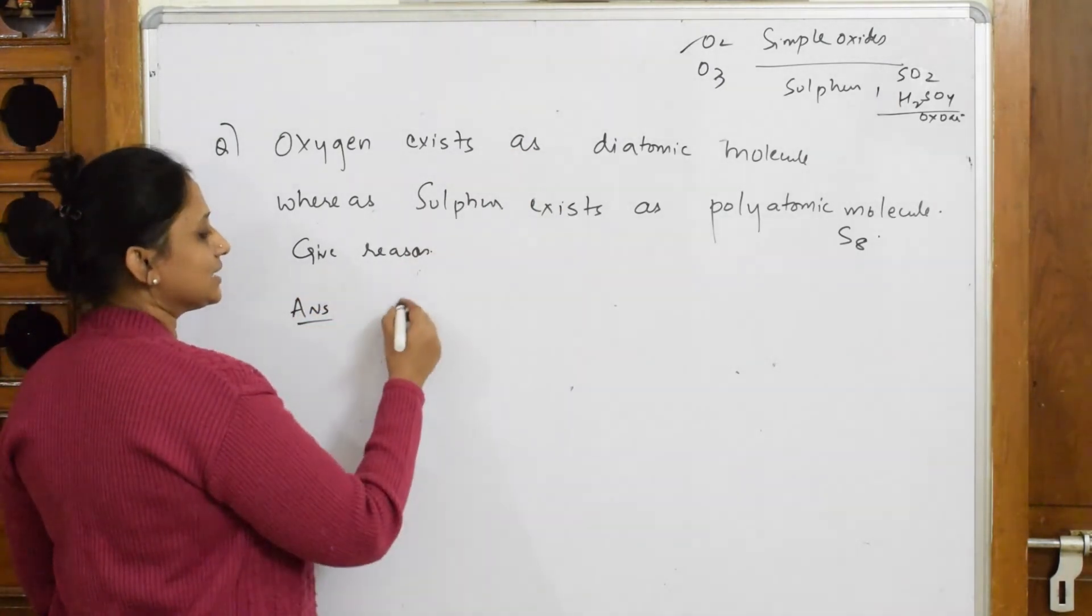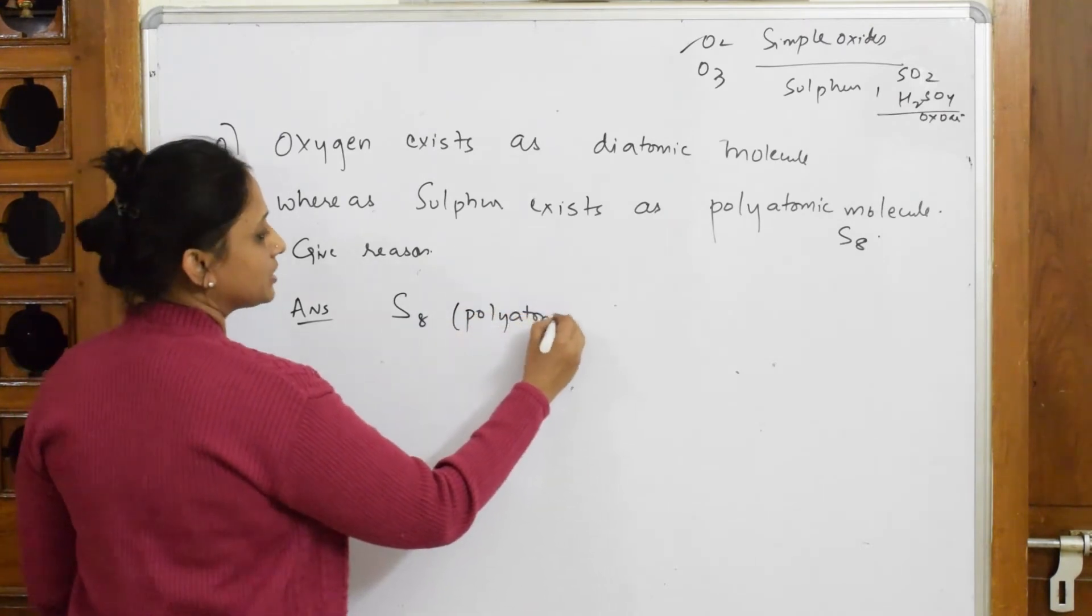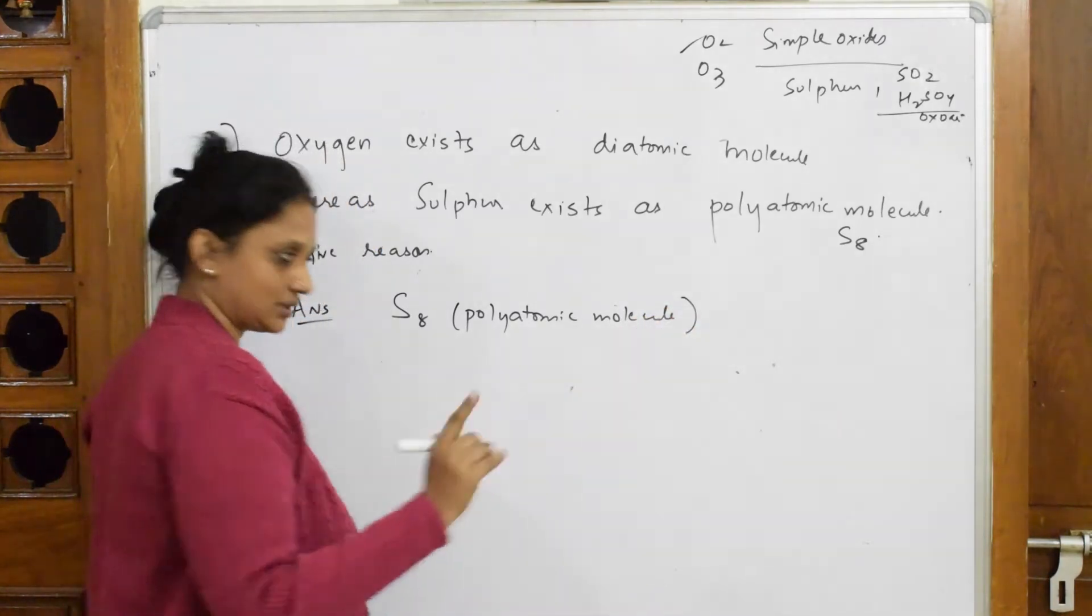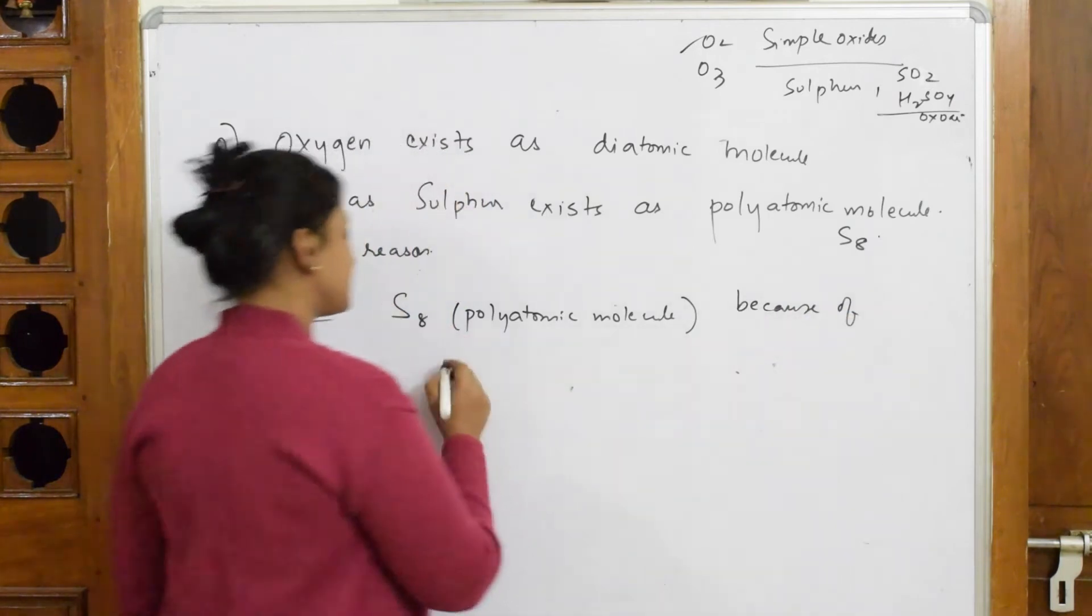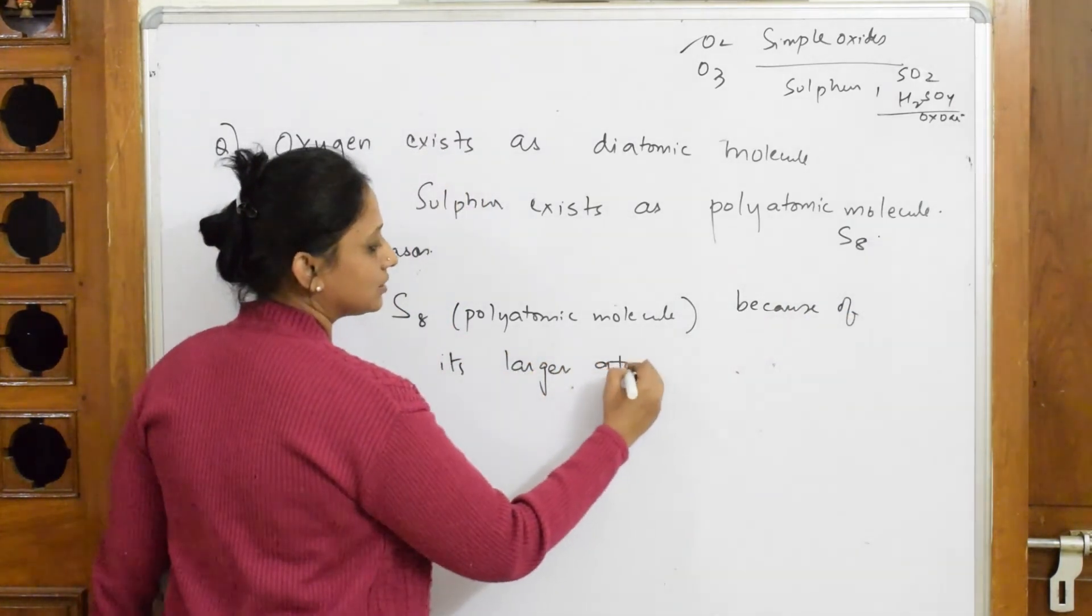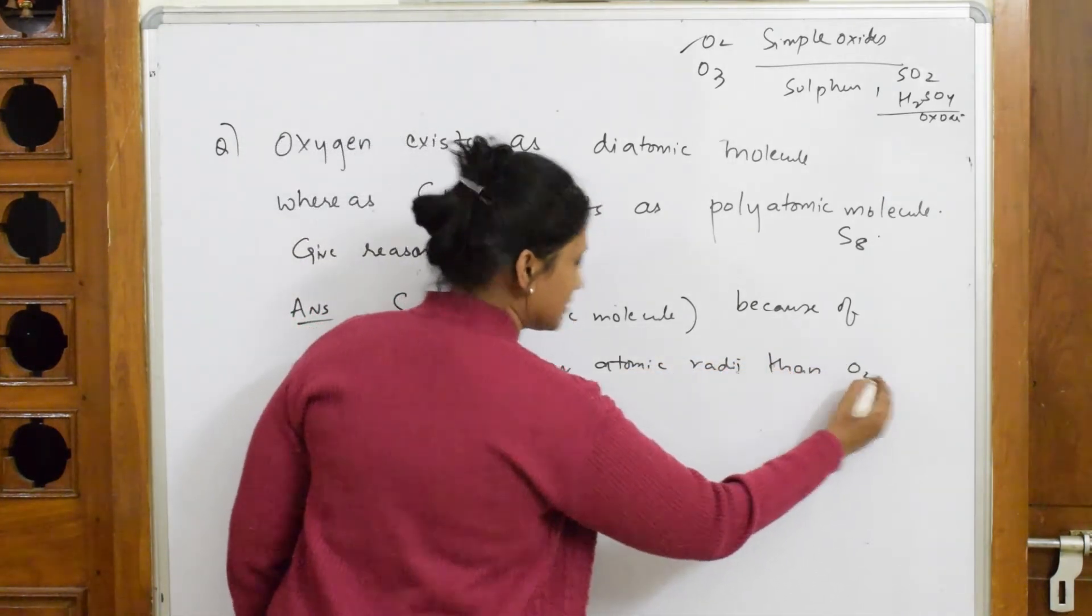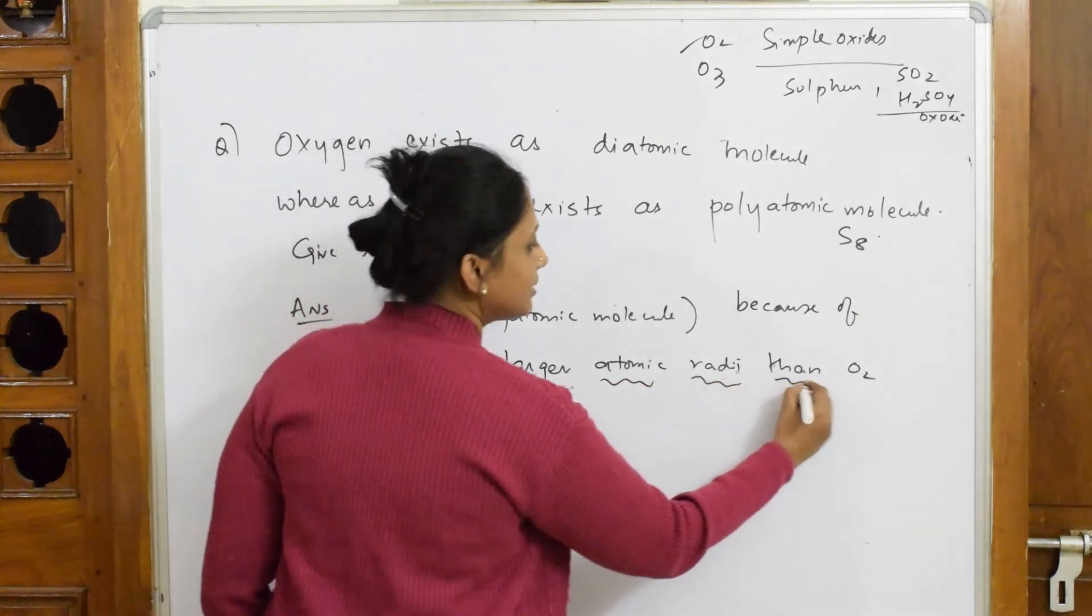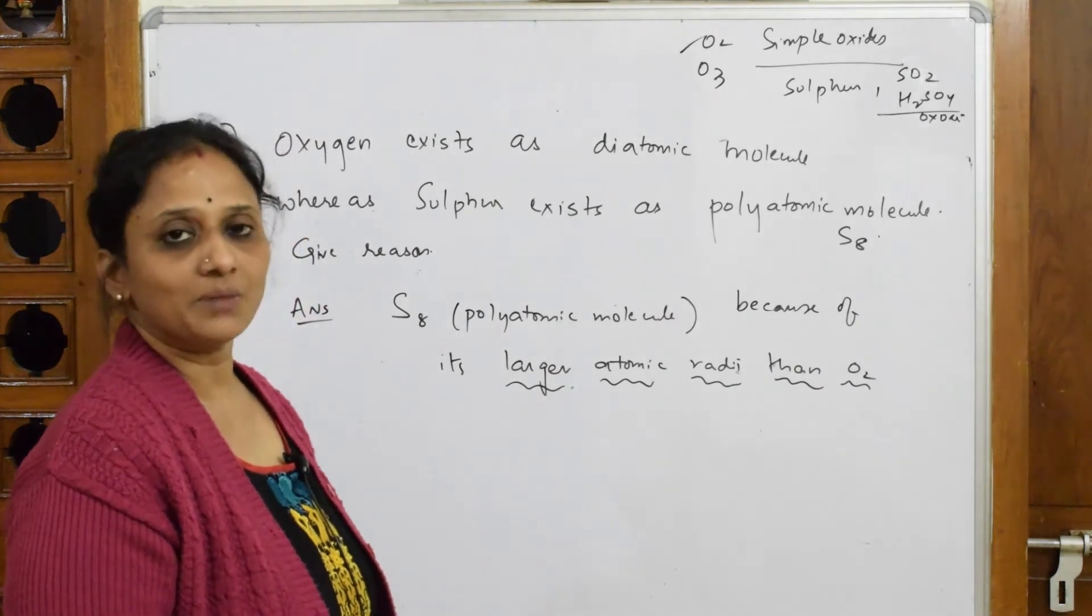Answer is, you can start writing like this: S8 exists as a polyatomic molecule because of its larger atomic radii than oxygen. This is the keyword. Larger atomic radii than oxygen is the keyword which will be there in the board marking scheme.